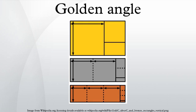In geometry, the golden angle is the smaller of the two angles created by sectioning the circumference of a circle according to the golden section.